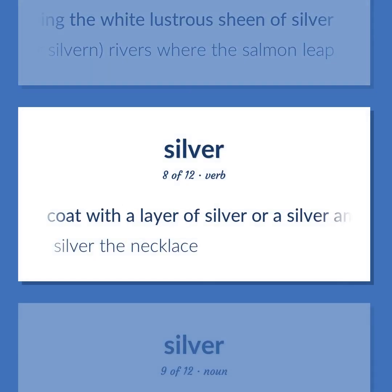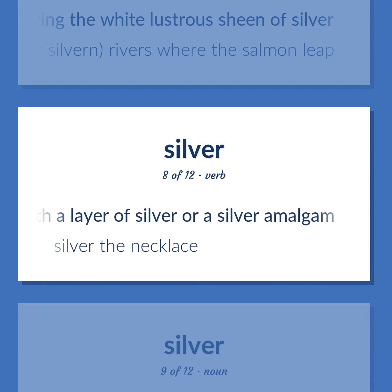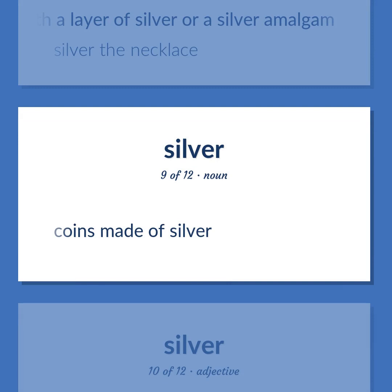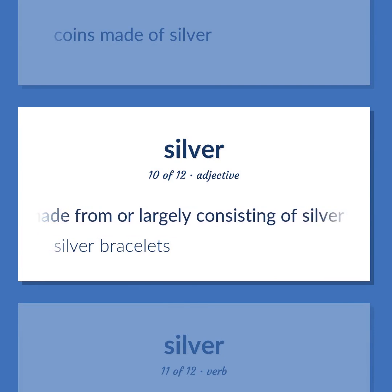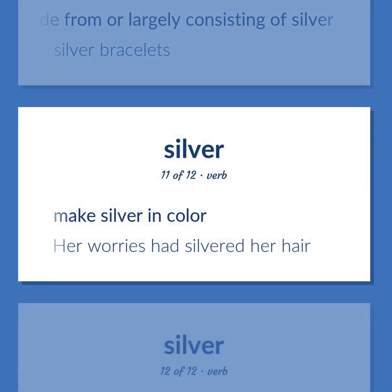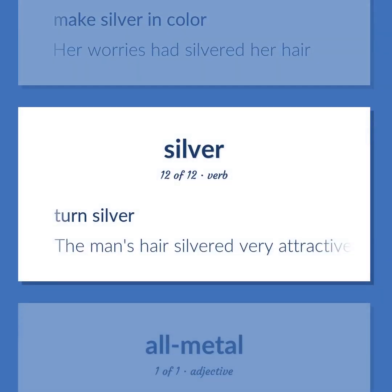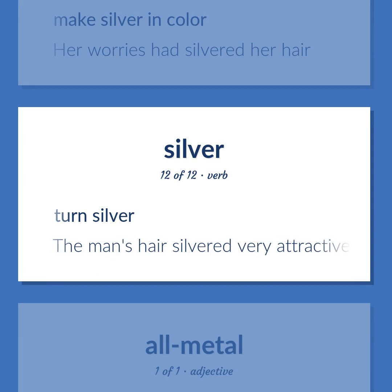Silver (verb, sense 1): coat with a layer of silver or a silver amalgam — silver the necklace. Silver coins: coins made of silver. Silver (adj): made from or largely consisting of silver — silver bracelets. Silver (verb, sense 2): make silver in color — 'her worries had silvered her hair.' Silver (verb, sense 3): turn silver — 'the man's hair silvered very attractively.'